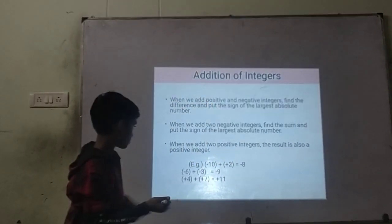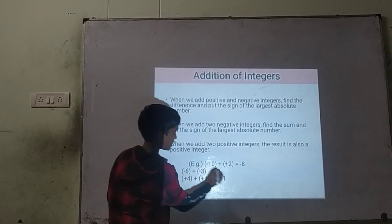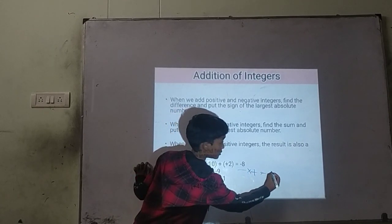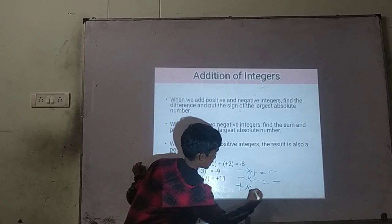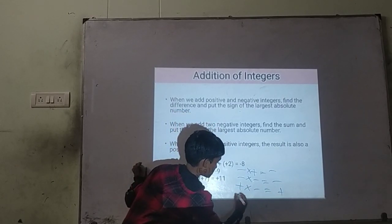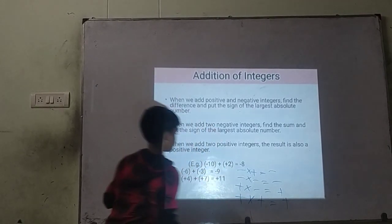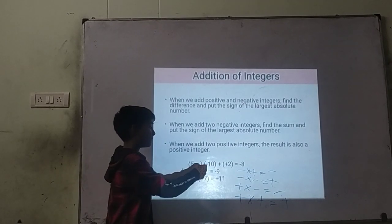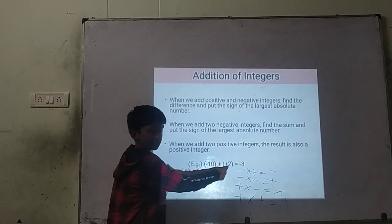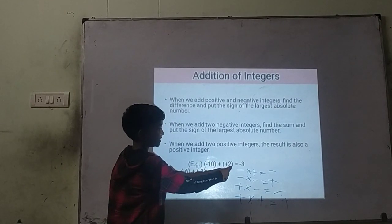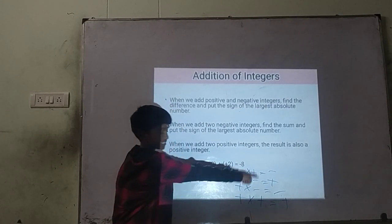For example, minus 10 plus 2: the largest absolute number is 10, so the sign is minus. Therefore, minus 10 plus 2 is equal to minus 8. The largest absolute value gives the sign, so the result is minus 8.